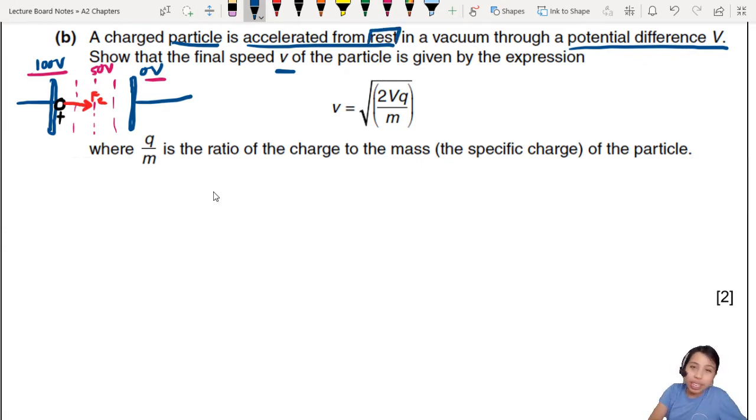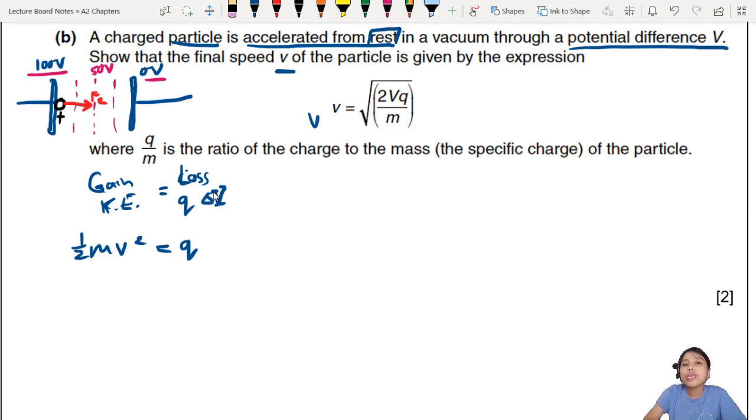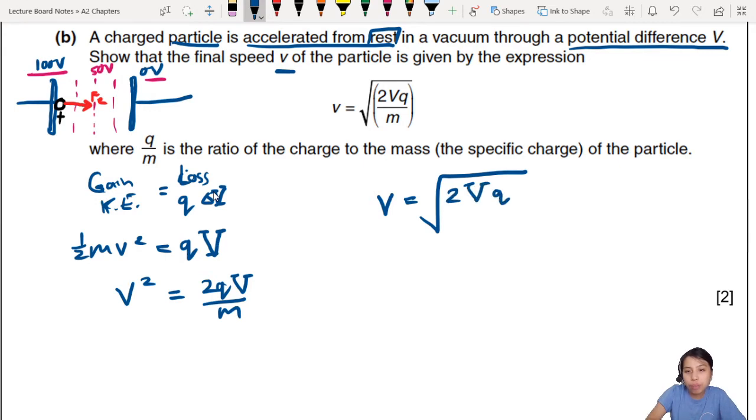It starts from rest, right? Got kinetic energy or not? No kinetic energy. So that means all the kinetic energy has to be converted from some kind of work done. You gain kinetic energy, and that's because there's a change in work done, a loss of QV. Think of potential difference. KE will be half MV squared equals to QV. You remember W equals to QV? This V, don't confuse with the velocity. This is volts, potential difference. So here you need to rearrange for V. V equals to 2QV over M. Last step: V equals to square root 2VQ over M. Done!